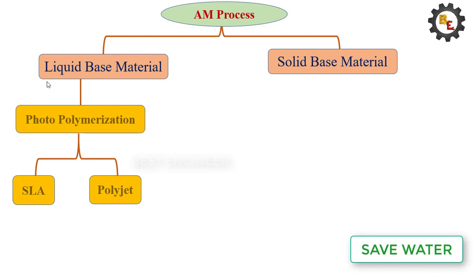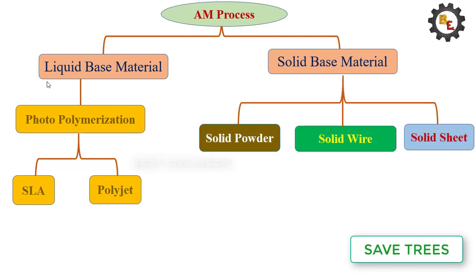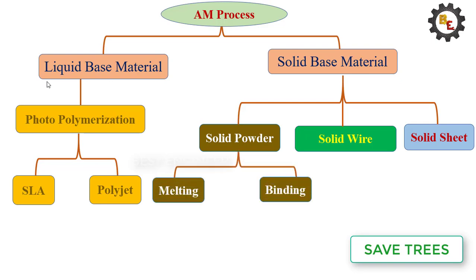For solid-based materials, based on the nature of the material, it is classified into three categories: solid powder, solid wire, and solid seed. Under solid powder there are two types: melting to make the component, and binding to make the component.